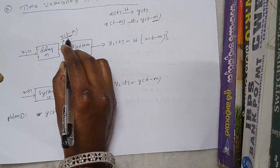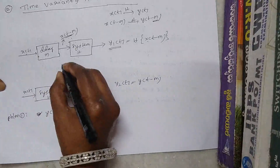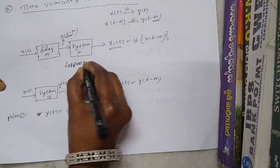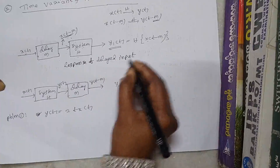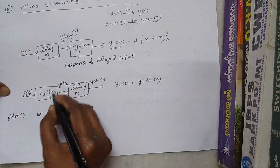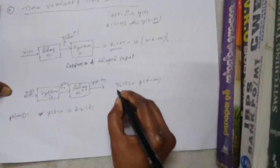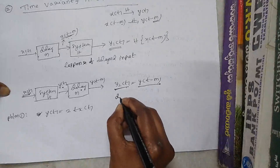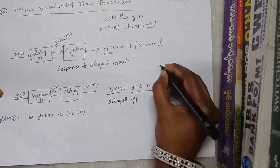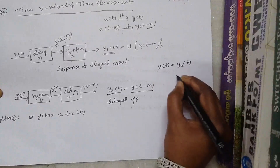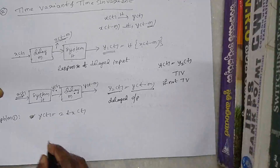The system's response to the delayed input signal is y1(t) = H{x(t-m)}, called the response of the delayed input. The second case takes the original signal through the system giving y(t), then delays it by m units: y2(t) = y(t-m), called the delayed output. If y1(t) equals y2(t), the system is called time invariant; if not, it is called time variant.